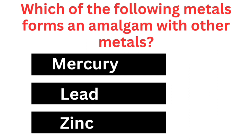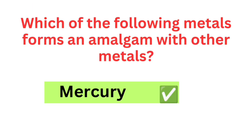Which of the following metals forms an amalgam with other metals? Mercury, lead, zinc. Answer: Mercury is the correct answer.